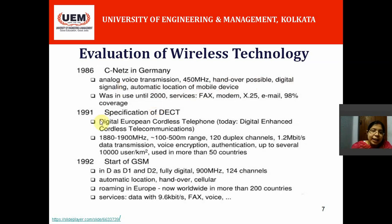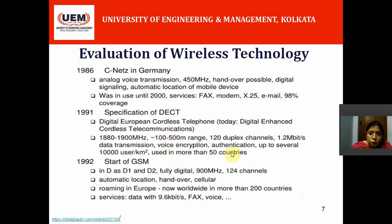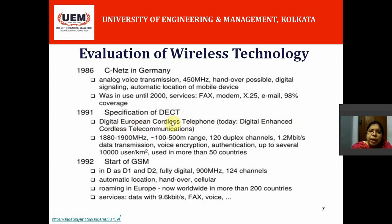In 1991, the specification of DECT — Digital European Cordless Telephony — was introduced. Some DECT systems operated in the 1880 to 1900 MHz band, with a range of 100 to 500 meters. It supports authentication, voice encryption, and up to several tens of thousands of users per kilometer squared, used in more than 50 countries. DECT was very popular not only in Europe but also in other countries.